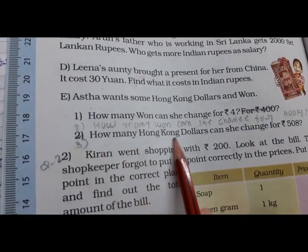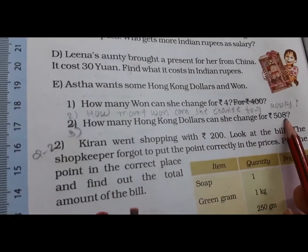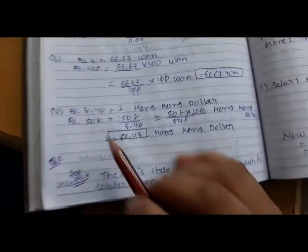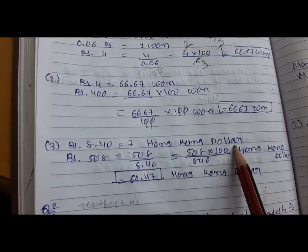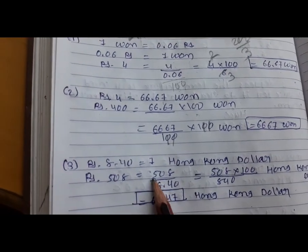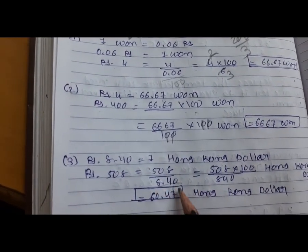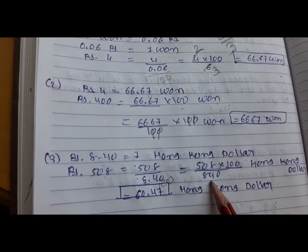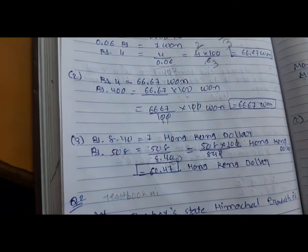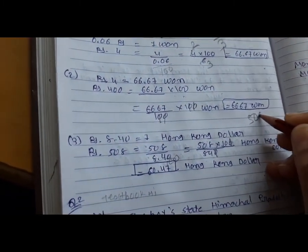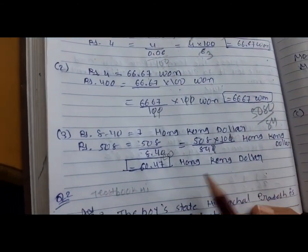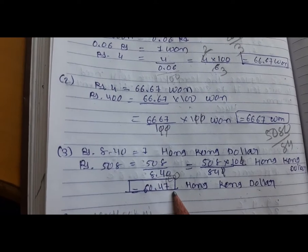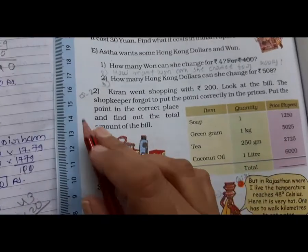How many Hong Kong dollars can Sia change for 508 rupees? Hong Kong dollar rate: 8.40 rupees = 1 HKD. So 508 upon 8.40 = 50800 upon 840. Dividing: 60.47 Hong Kong dollars.